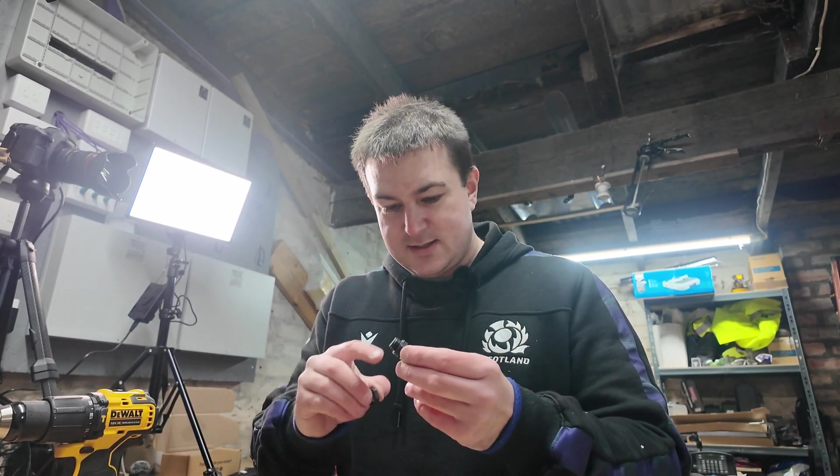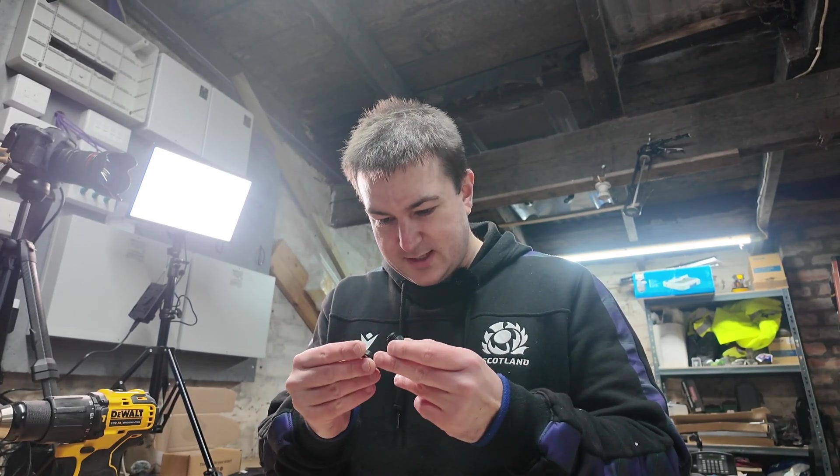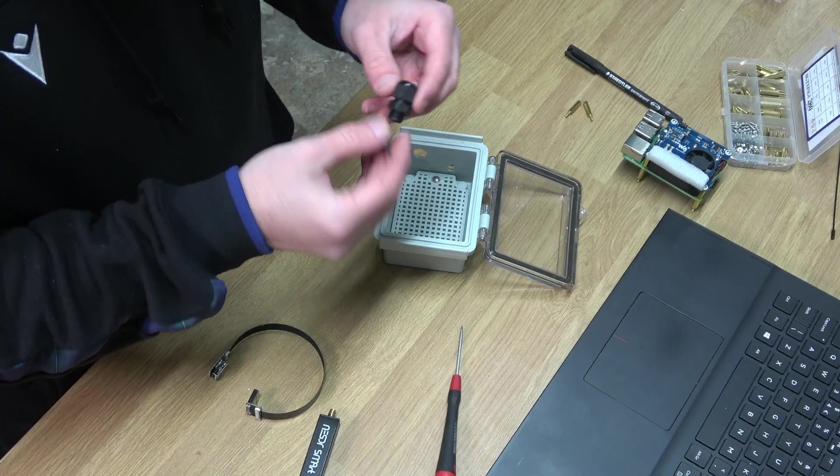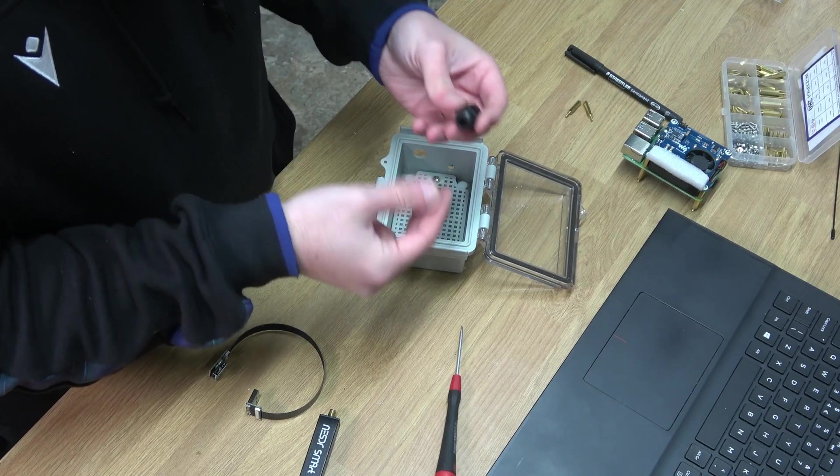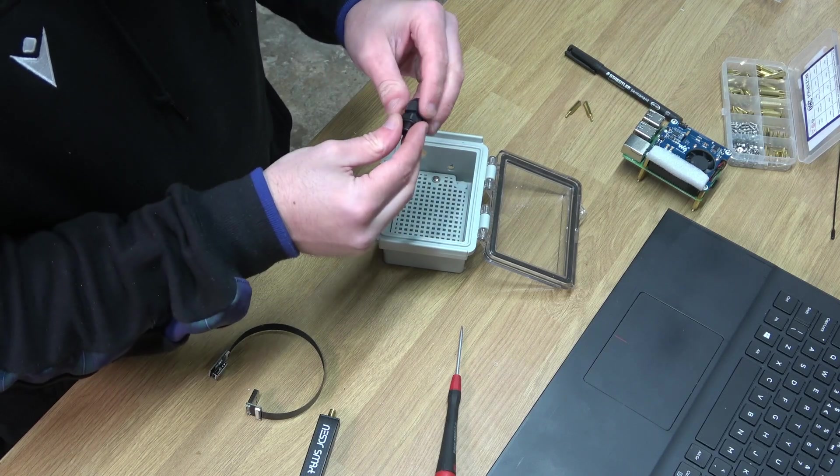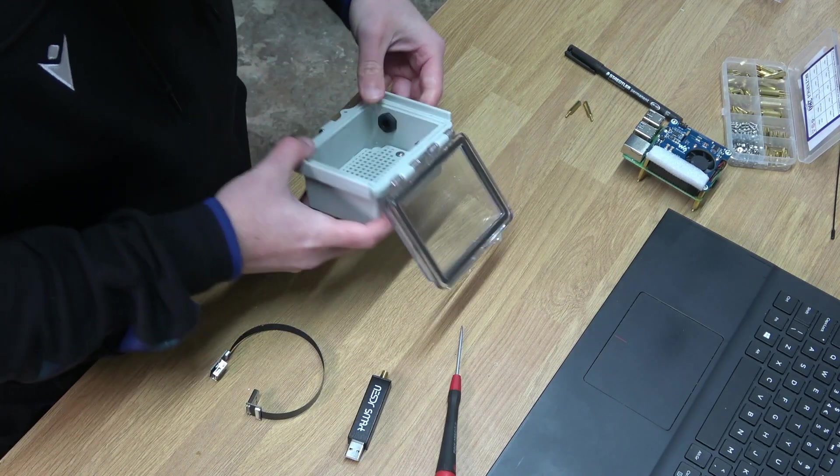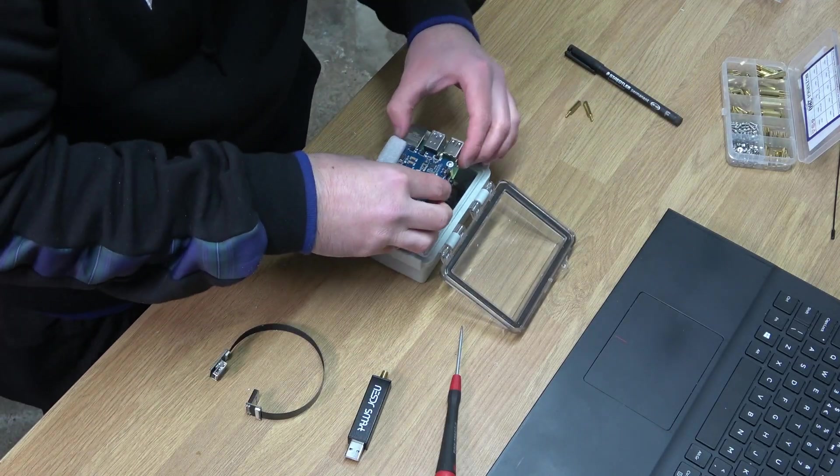Now the good thing with these glands is that they have a rubber seal on them so when we get that tightened up that will seal from the gland to the box and then when we tighten this it will seal from the rubber gland that's in there to the cable. Right, how we're sitting in with the gland in.